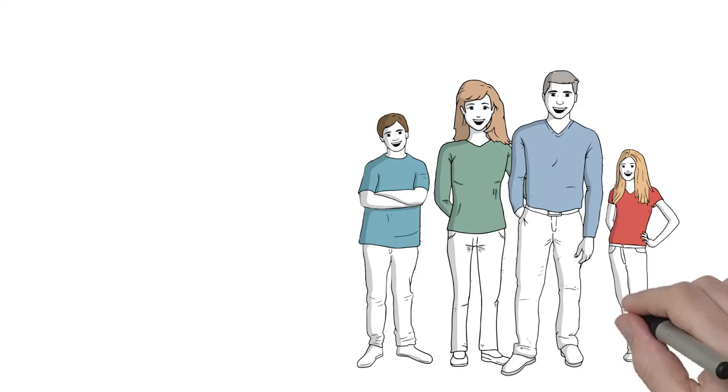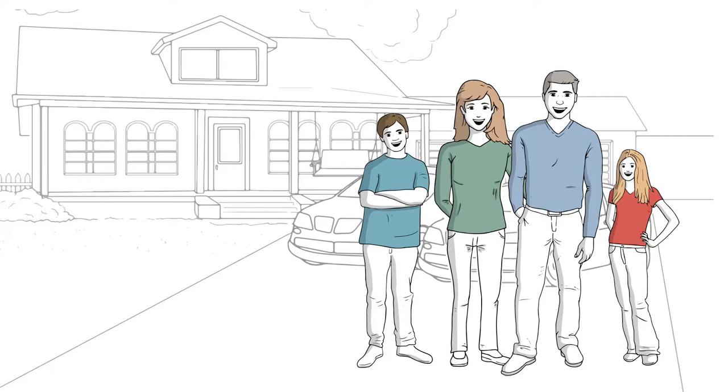Bill and Mary are typical in many ways. They have two cars, two jobs, two kids, and one mortgage.